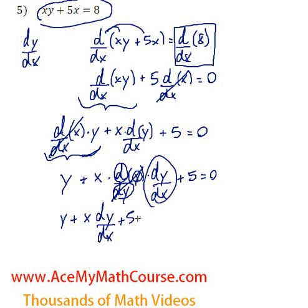Plus 5 equals 0. So we want to isolate dy/dx. I'm going to get started by just subtracting y and 5 from both sides of the equation.